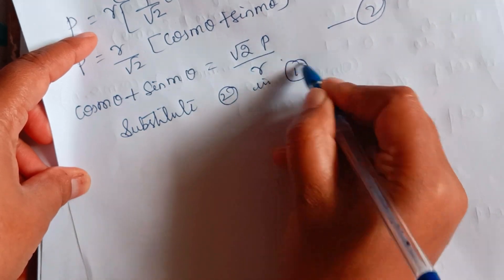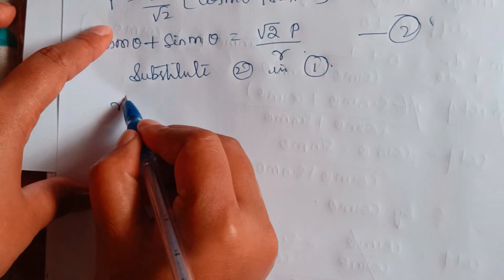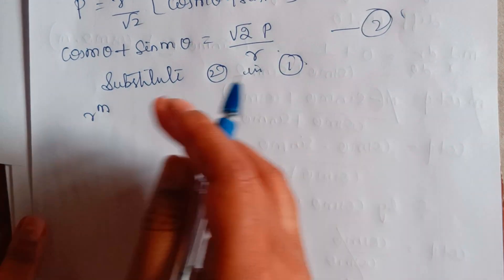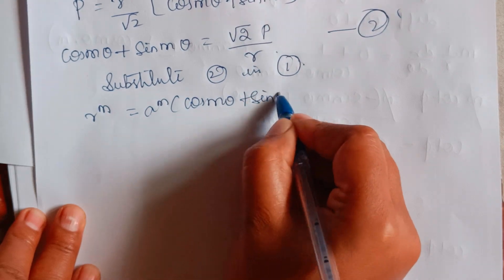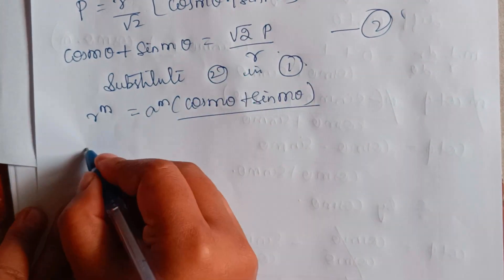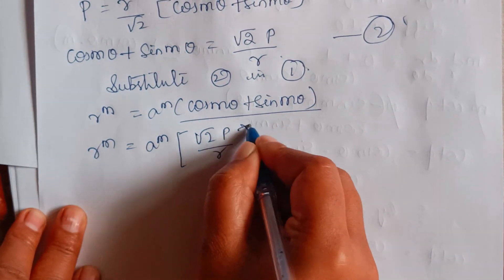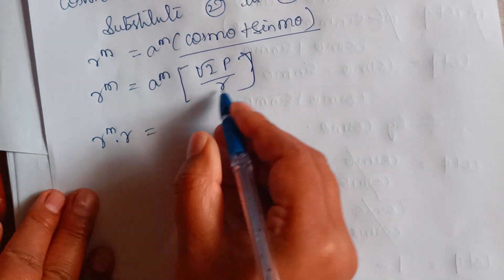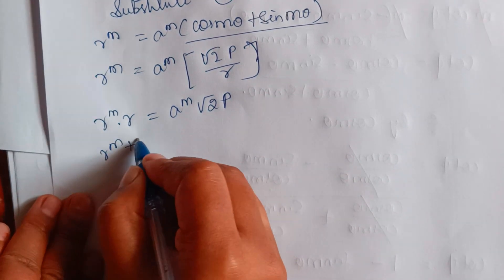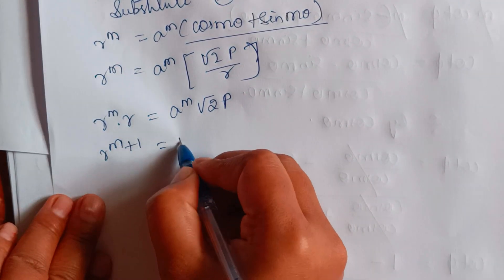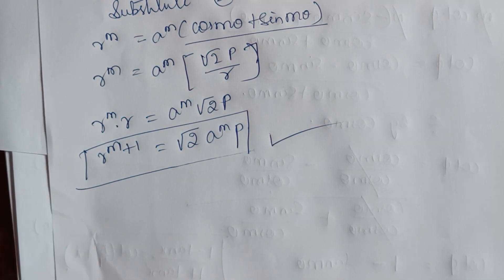Equation 1 is r^m = a^m(cos mθ + sin mθ). Substituting equation 2, cos mθ + sin mθ = √2p/r, we get r^m = a^m × (√2p / r). So r^m × r = a^m × √2p. Since the bases are the same, we add the powers: r^(m+1) = √2 · a^m · p. Hence, this is the final pedal equation.